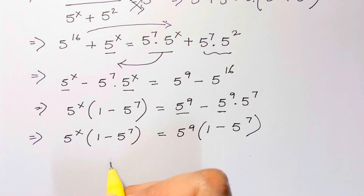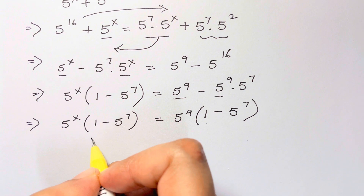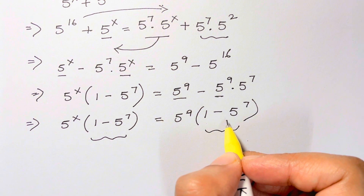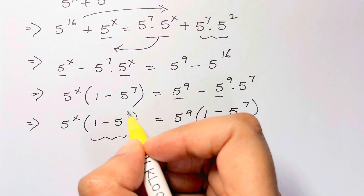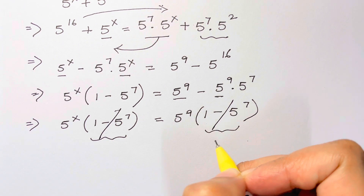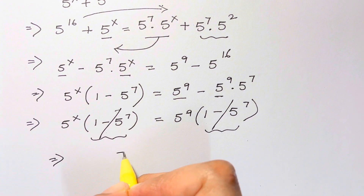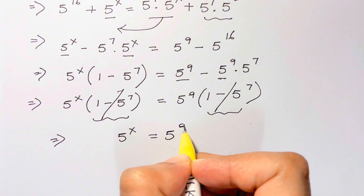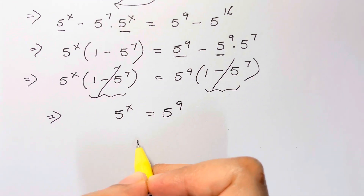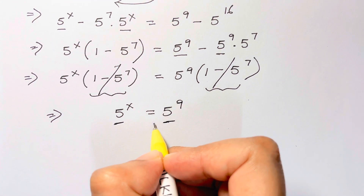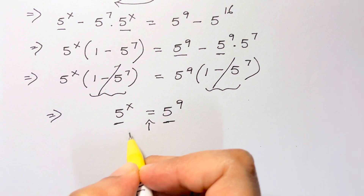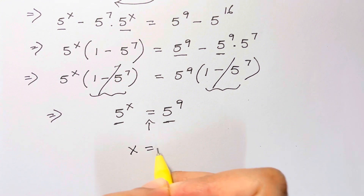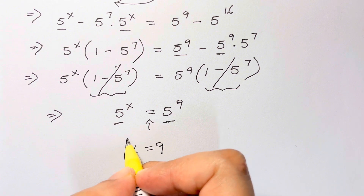As you can see, on both the left-hand side and right-hand side I have the same term 1 minus 5 to the 7th. Since they are being multiplied, I can cancel them. So I'm left with 5 to the x equals 5 to the 9th. When bases are the same, I equate the powers: x equals 9, and that's our answer.